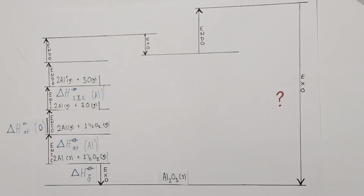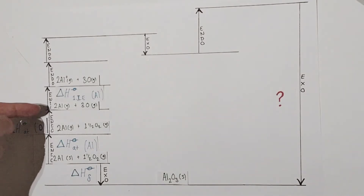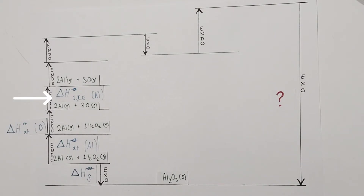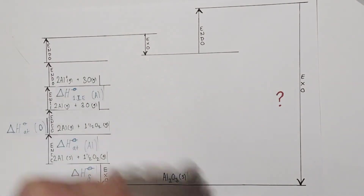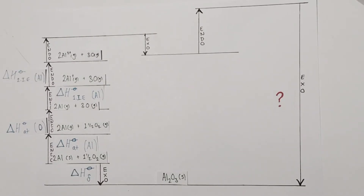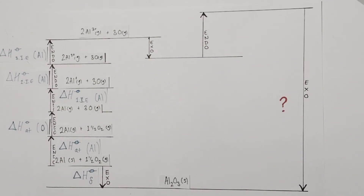Now we come to the ionization phases. Ionization energy is a successive process — we can't jump straight from Al to Al3+ due to the quantized nature of electron energy levels. Instead, we sequentially go from Al to Al+, then to Al2+, then to Al3+. The first ionization energy is the enthalpy change for the removal of one mole of electrons from one mole of gaseous atoms to form one mole of monopositive ions. It is endothermic because energy is needed to overcome attractions of electrons to the nucleus. We then proceed through the second and third ionization energies, producing two moles of Al3+ ions.